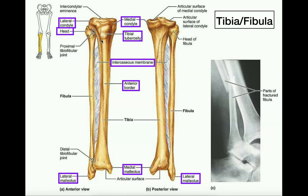If we start at the base of the tibial tuberosity and work downwards in the lab on the model, we'll feel a crest that sort of sticks up — a thin bony prominence that goes down most of the length of the shaft of the bone. This is called the anterior border; you may also see it called the anterior crest or anterior margin. The anterior crest can only be felt or seen on the anterior surface, and along with the tibial tuberosity, it will help us determine left and right.